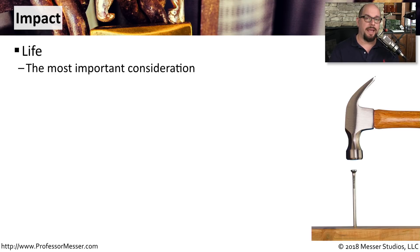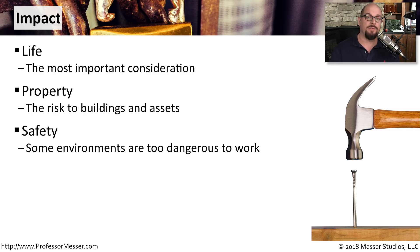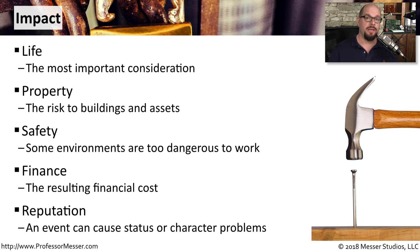There are many considerations when building a business impact analysis. Most importantly, life — everyone in the organization must be safe, and that should be the primary goal. Then we look at property: the buildings and places where people work, to understand the risk to those assets. We also consider safety — for example, after a hurricane there may be downed power lines making buildings unsafe. There will always be some financial impact from an incident, and finally we need to consider the reputation of the organization if it has no backup systems to get back up and running.